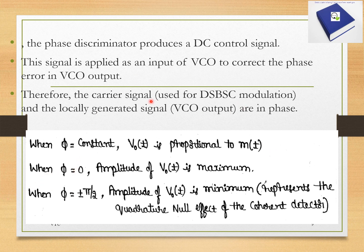When φ is 0, V(t) is proportional to M(t) and the amplitude is maximum, since cos(0) = 1. When φ equals ±π/2, the amplitude of V(t) is minimum, representing the quadrature null effect of the coherent detector.